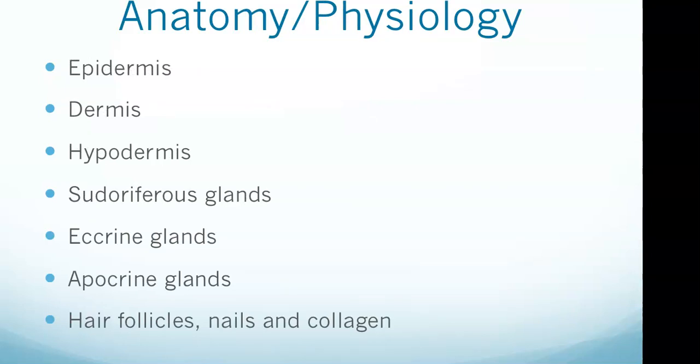A little basic intro: the integumentary system is comprised of the largest organ in the human body, which is the skin. Additionally, this system includes hair, nails, and accessory glands. The integumentary system is in constant contact with the external environment and offers protection from the body's surroundings.